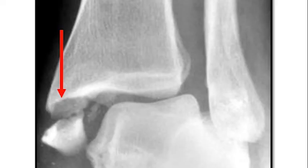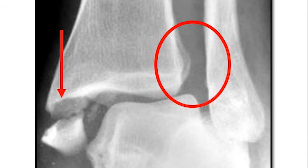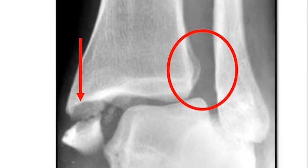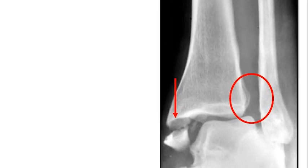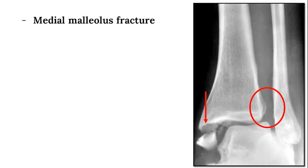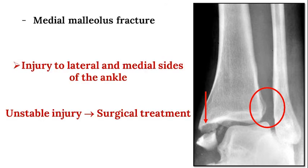On this radiograph, the medial malleolus is fractured, and there is a significant increase in tibiofibular clear space indicating a syndesmotic injury. Given that the syndesmosis on the lateral side of the ankle is injured in the setting of a fracture of the medial malleolus, this is an unstable injury that requires surgery.